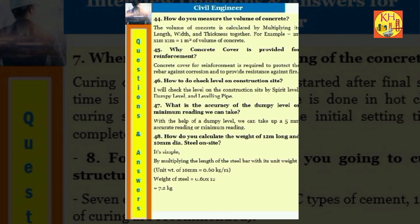Question 44: How do you measure the volume of concrete? The volume of concrete is calculated by multiplying its length, width, and thickness together. For example, 1 meter times 1 meter times 1 meter equals 1 cubic meter of volume of concrete. Question 45: Why concrete cover is provided for reinforcement? Concrete cover for reinforcement is required to protect the rebar against corrosion and to provide resistance against fire. Question 46: How to do check level on construction site? I will check the level on the construction site by spirit level, dumpy level, and leveling pipe. Question 47: What is the accuracy of the dumpy level or minimum reading we can take with the help of a dumpy level? We can take up a 5 millimeters accurate reading or minimum reading.